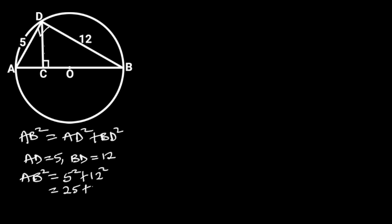And 12 squared is equal to 144. 25 plus 144 is equal to 169. So AB squared is equal to 169. Taking the square root of both sides will give us AB is equal to 13.